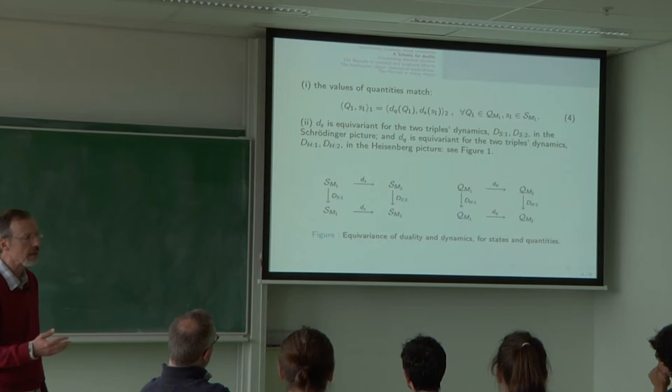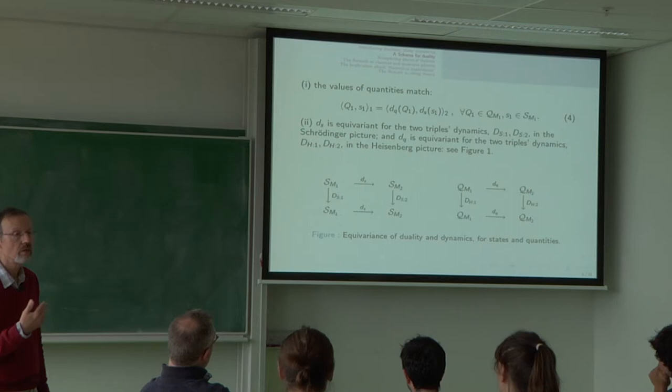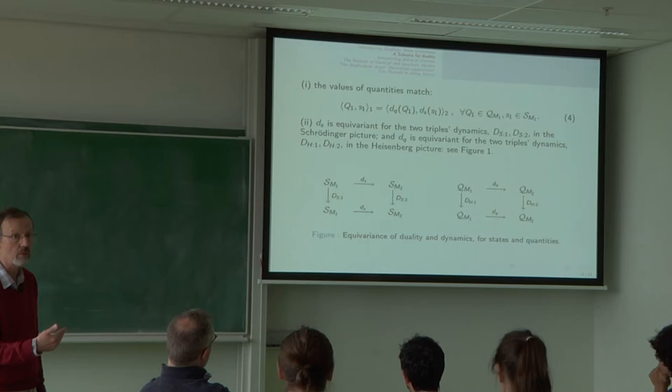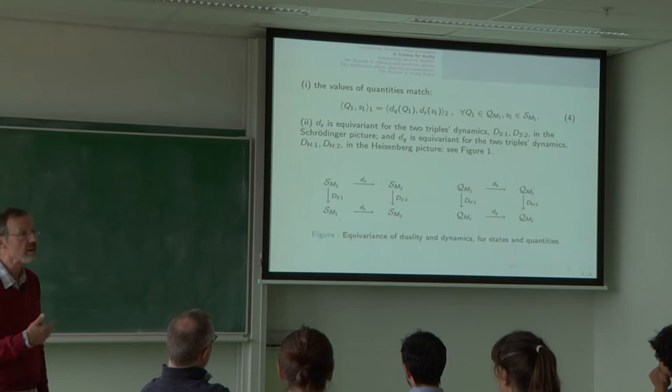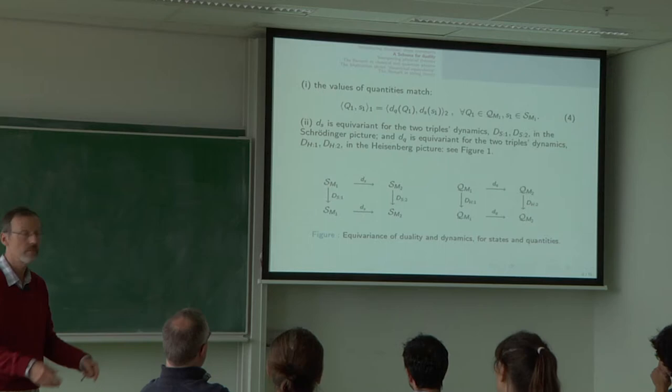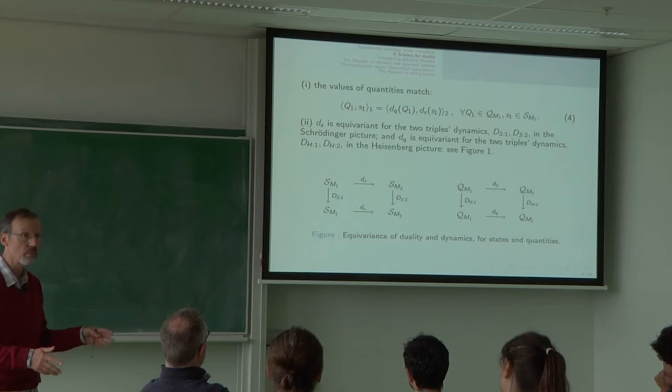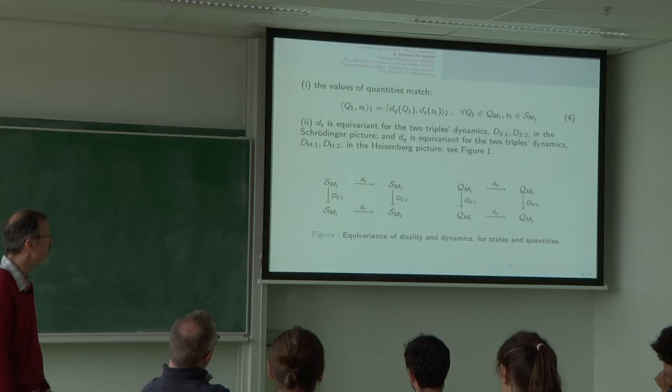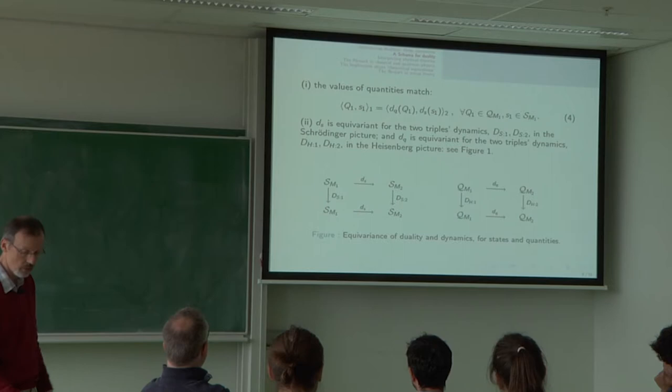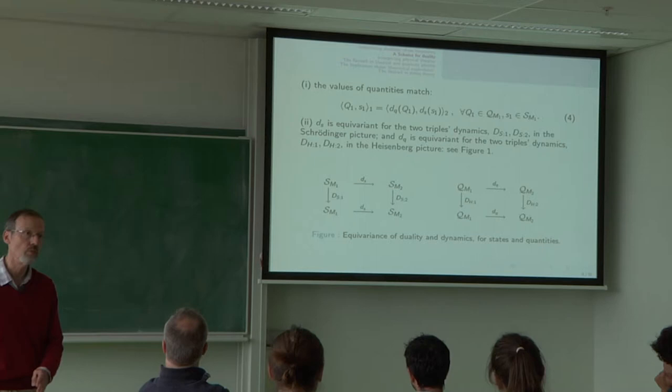Well, of course, isomorphism in sets just means bijection. But, for a group, it would be a group isomorphism. For an algebra, it would be an algebra isomorphism. And, so it goes. For a Hilbert space, it would be a unitary map. All this will be cashed out in examples. But, the general idea is there's a map on states and a map on quantities, such that the values match. That pairing, that angle bracket, is just the pair. That is just the value of the quantity, Q1, when the system is in the state S1, according to the theory or model on the left, which I have labeled 1.